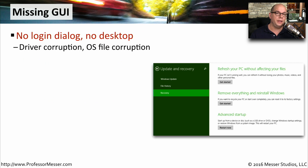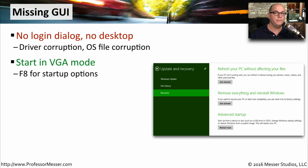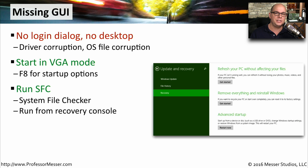If you start your computer and you're not getting any graphical user interface, no login dialog box, or no screen at all, then you probably have driver corruption or a problem with operating system files. One thing you can try is to start in VGA mode by pressing F8 while Windows is booting and choosing to start in VGA mode. Once the system has started, you might want to try running SFC, the system file checker, which checks all of your operating system files and makes sure they're all working properly. This can usually be run from the recovery console at the command prompt.